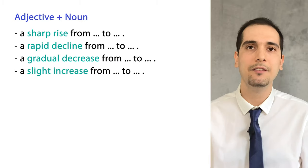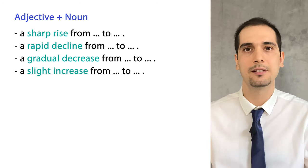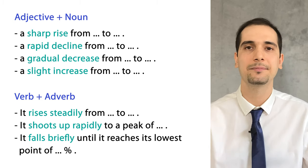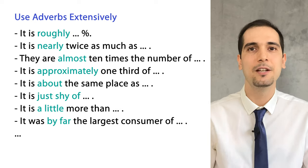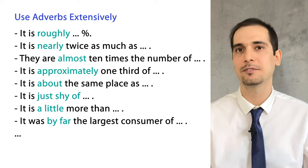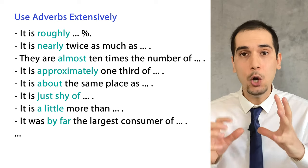In the detailed paragraphs you have to use different combinations of words. Use adjective-noun combinations such as 'a sharp rise from this to that' or 'a rapid decrease from this to that.' Also use verb-adverb combinations: 'something shoots up rapidly from this to that,' 'something falls briefly from this to that.' Try to use a lot of adverbs — words like 'roughly' and 'approximately' — because sometimes you can't know the exact number from the chart.